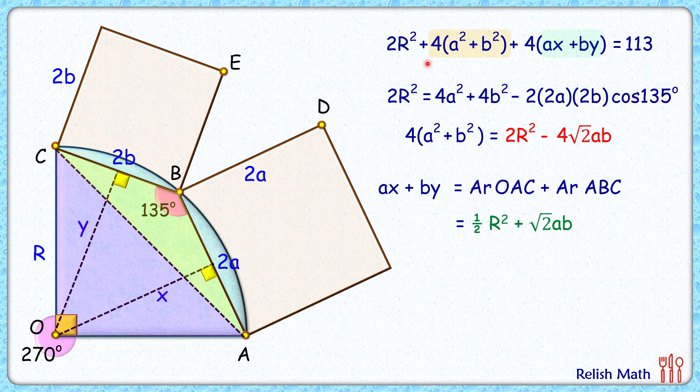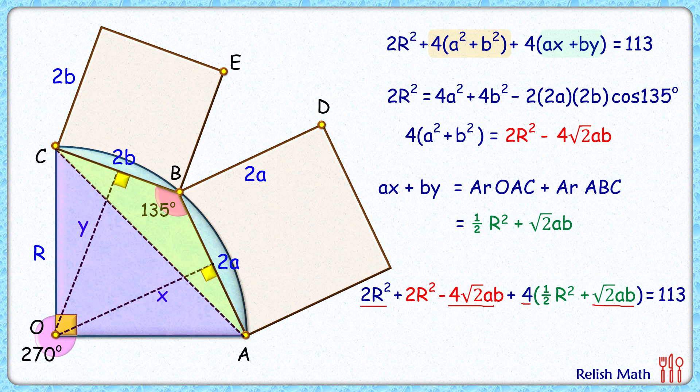So our original equation will be in this form. When we open the bracket here, you will get -4√2ab and from here +4√2ab. This will get cancelled down, so we will be left with 2r² + 2r² + 2r², so we are getting 6r² = 113. r² = 113/6, and r will be 4.34 cm, and that's our answer.